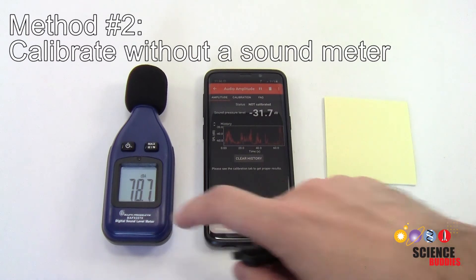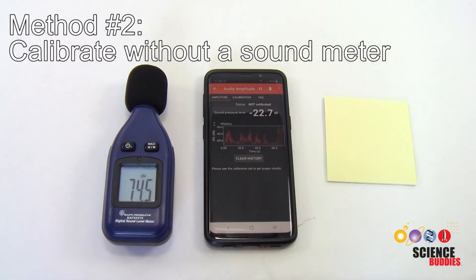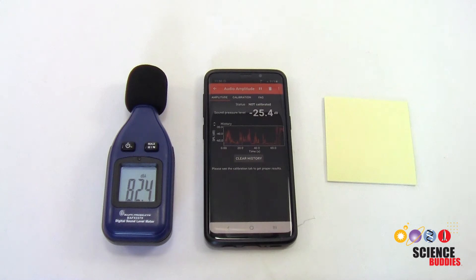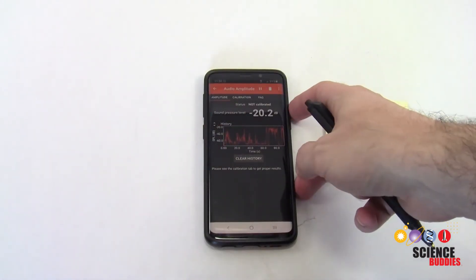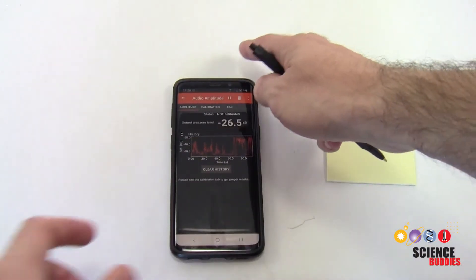Another option, if you do not have an external decibel meter available, is that you can use the fact that a quiet room, maybe with a little background hum from something like a computer fan, is usually at about 40 decibels. You can see that here if I stop talking. Even if you don't have this meter, you can use that information to calibrate your app in Firefox.